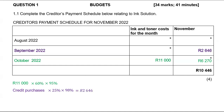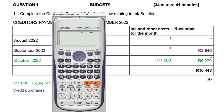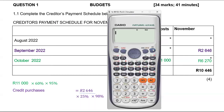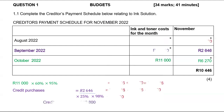When I take credit purchases and multiply them by 25%, then multiply them by 98%, I should get $2,646. But I want the credit purchases, so I am going to divide both sides by 25% × 98%. When you take $2,646 and divide it by 25% × 98%, it will give me $10,800. And those will be September credit purchases.